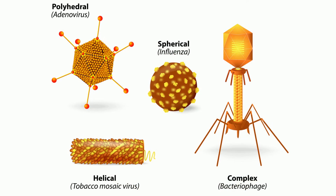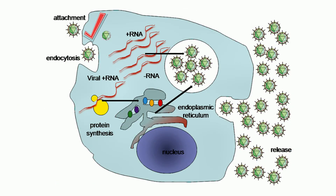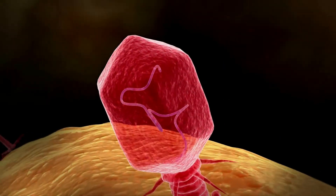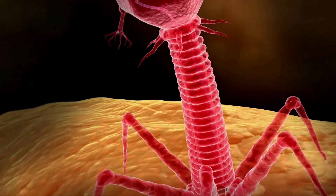Viruses come in a wide variety of shapes. Since viruses cannot replicate without a host, they are often referred to as parasitic. A virus will attach to the host cell and trick it into letting it in, then hijack the host and force the cell into making copies of the virus. Other times it may just attach to the outside of the cell and inject its genetic material inside.